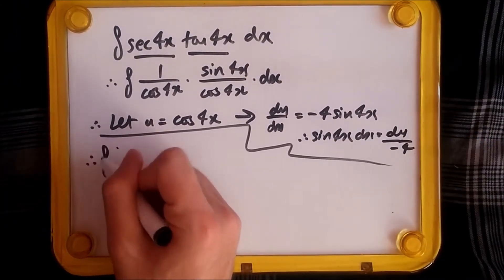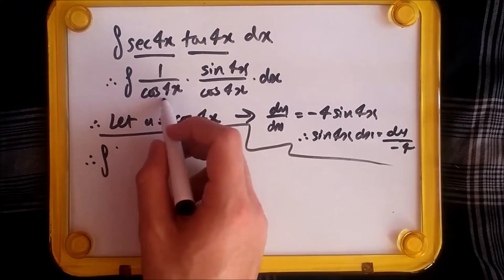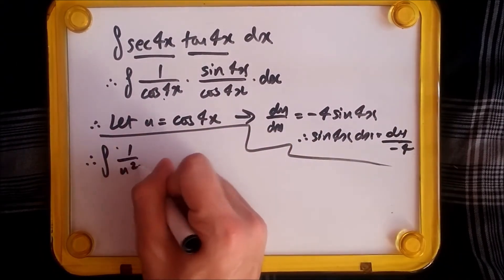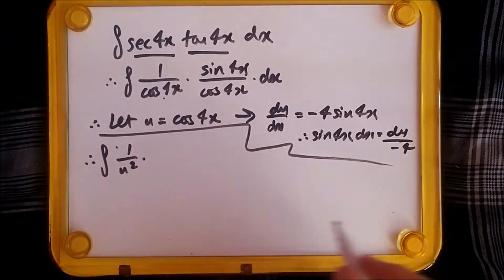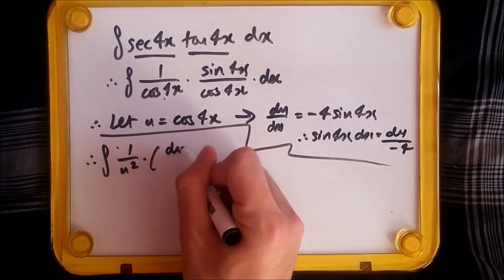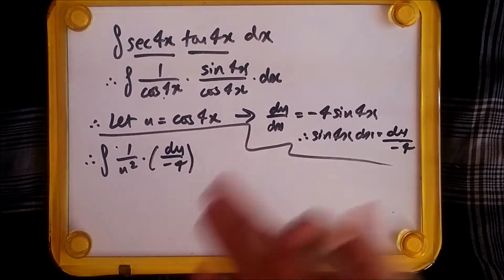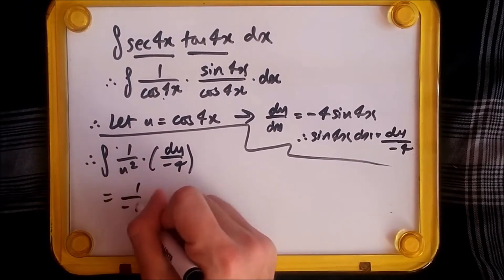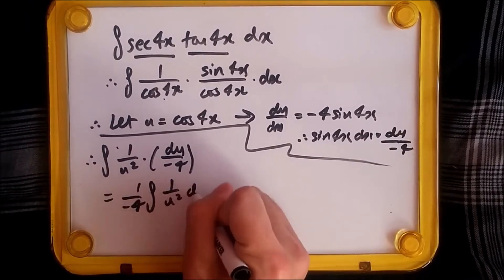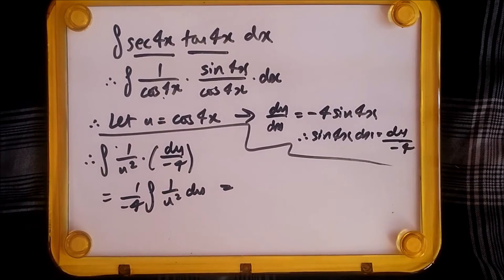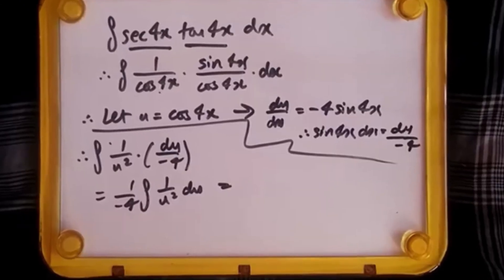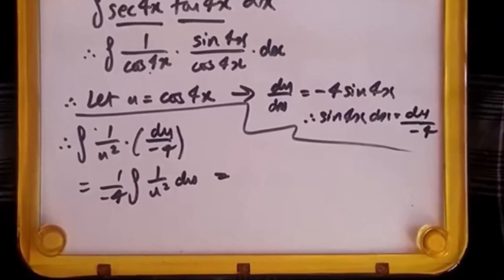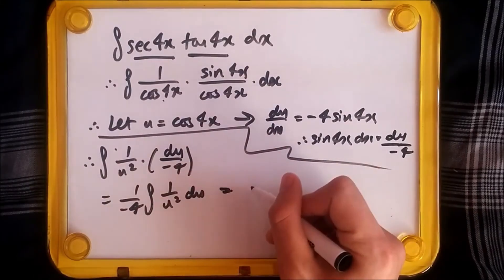Now replace all your terms. I've replaced cos(4x) in both places with u — since there are two of them you get u² on the bottom — and replaced sin(4x)dx with du/(-4). You now have an integral entirely in terms of u. Pull the constant -1/4 outside the integral, leaving just 1/u² to integrate.